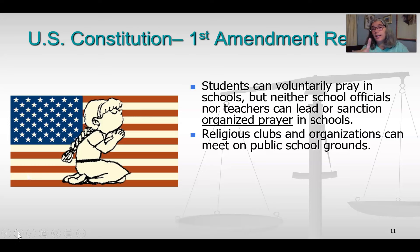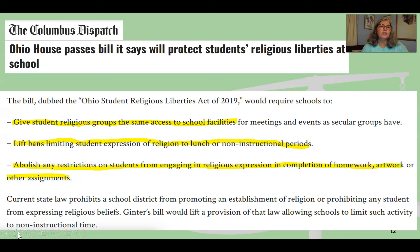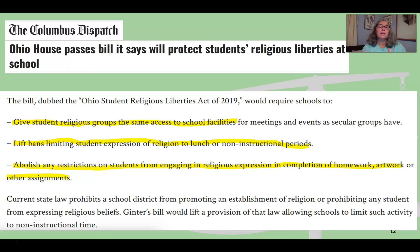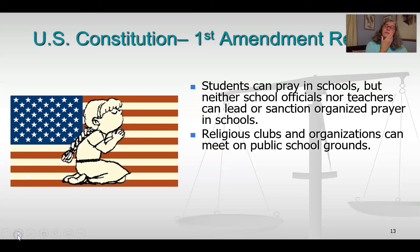Religious clubs and organizations can meet on public school grounds. Did you know that? In Ohio, that is actually a fairly recent change. There's a new law called the Ohio Student Religious Liberty Act of 2019. It gave student religious groups the same access to school facilities — so if you can have a 4-H student group meet on campus, you can have a Students for Christianity group meet on campus too. It lifts the ban that restricted students' expression of their religion to just lunch or non-instructional periods, and also allows them to express their religious beliefs in their assignments and academic products. So that's an interesting bill for the state of Ohio.